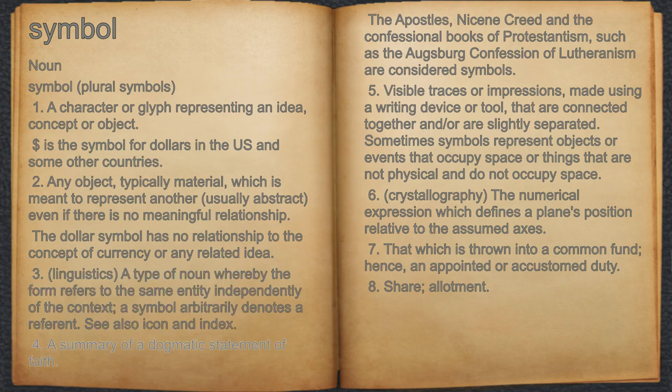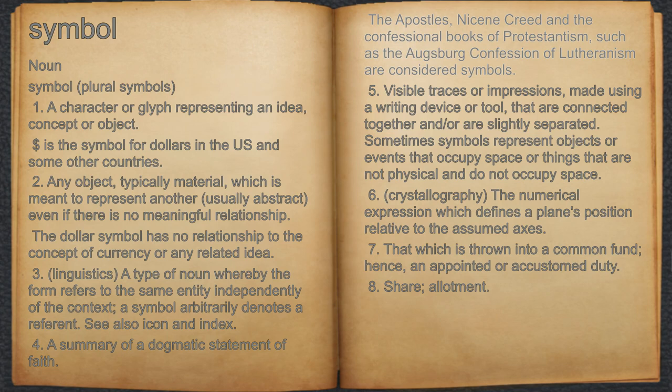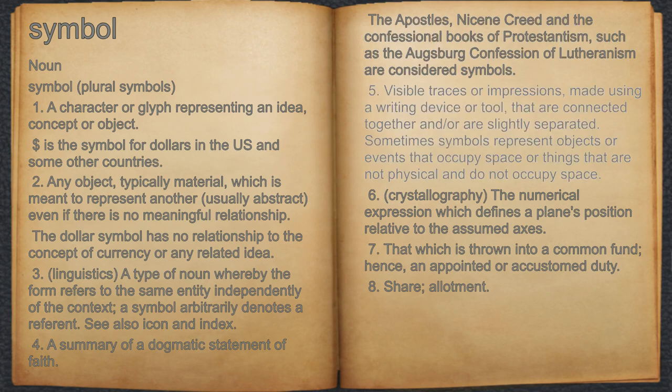4. A summary of a dogmatic statement of faith. For example, the Apostles' Nicene Creed and the confessional books of Protestantism, such as the Augsburg Confession of Lutheranism, are considered symbols. 5. Visible traces or impressions made using a writing device or tool that are connected together and or are slightly separated. Sometimes symbols represent objects or events that occupy space or things that are not physical and do not occupy space.